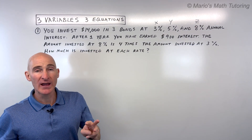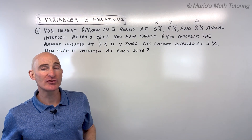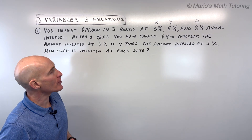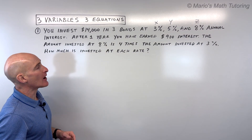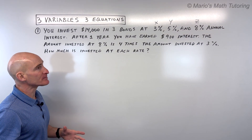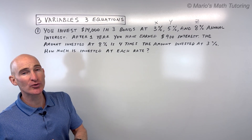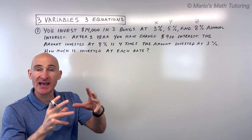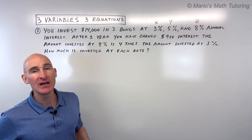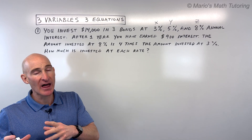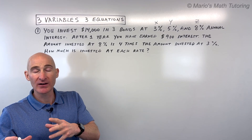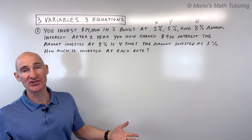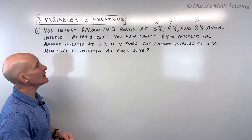When you have three variables or three unknowns, you need three equations. When doing word problems, if you take it a sentence at a time, a lot of times each sentence gives you one equation. Another approach is to read through it quickly first and then read the last sentence, which usually tells you what you're solving for.